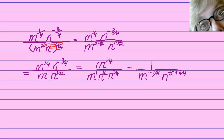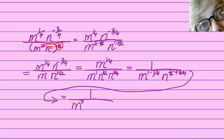Now all we have to do is figure out what one minus one-fourth is and what one-half plus three-fourths is. Any way you look at it, the answer is going to be 1 over m to the three-fourths times n to the five-fourths, and we are done. We started with exponential notation and we end with it.